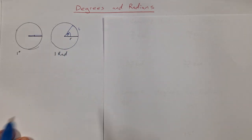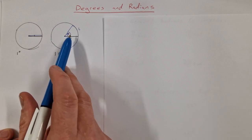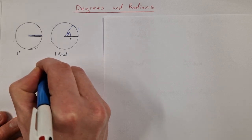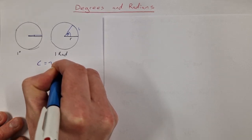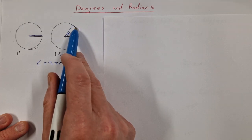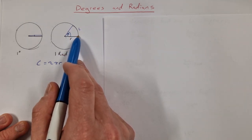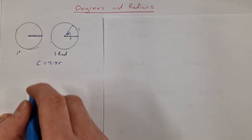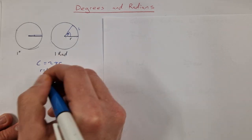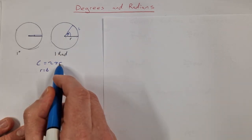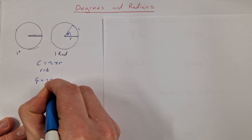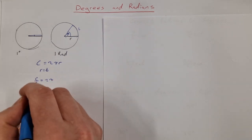So how do we find out how many radians are in one circle? If we look at the circumference formula, C equals 2π times the radius. The radius is r and the arc length is L, so we can figure out how many of these L's are in C. If L equals r, we can divide across to get C over L equals 2π. So there are 2π radians in one circle.